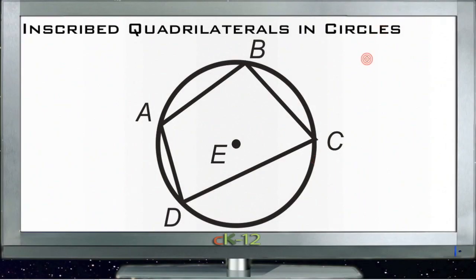Inscribed Quadrilaterals in Circles is actually a pretty quick little lesson. All we're going to do here is discuss what happens when you take a four-sided figure, any quadrilateral, and put it inside a circle so that all four of the vertices rest at different locations on the circle. So basically you just fit a four-sided figure inside the circle.